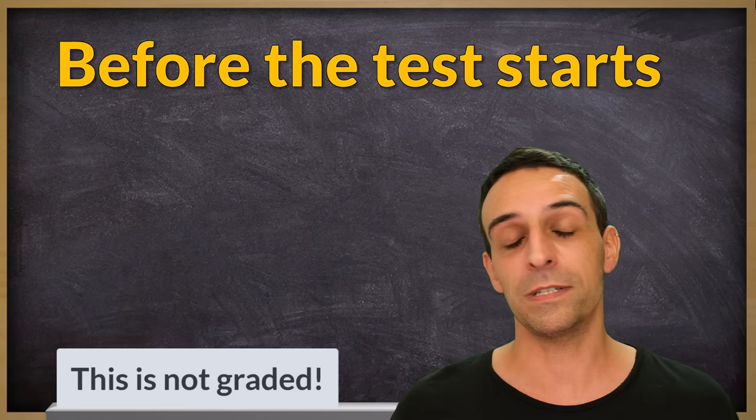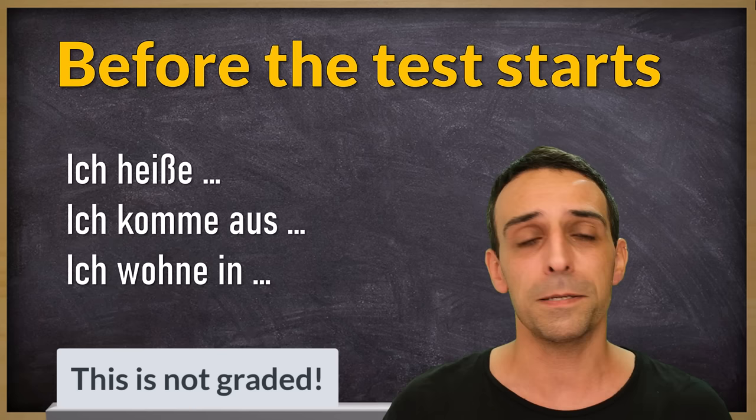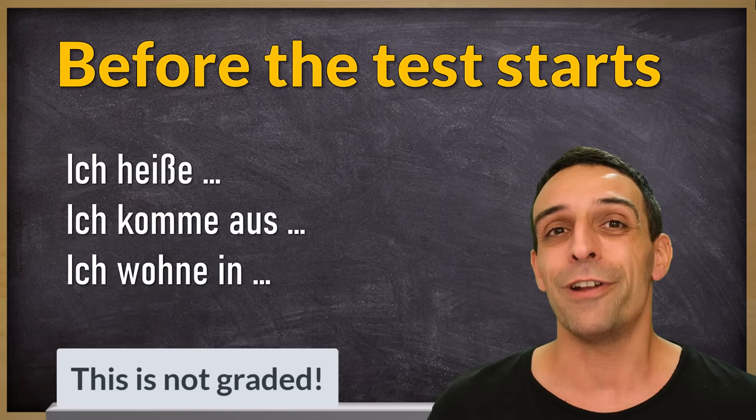It could sound something like this: Hallo, ich heiße Johannes Müller. Ich komme aus Frankreich. Ich wohne seit zwei Monaten in Deutschland. That's basically already enough. And now, here is the first part.